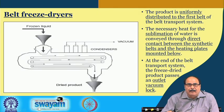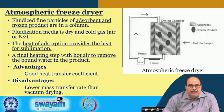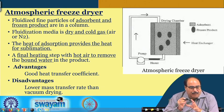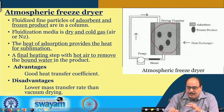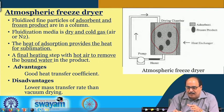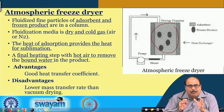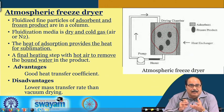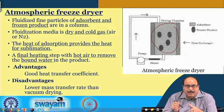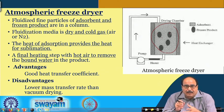The atmospheric freeze dryer uses fluidized fine particles of the adsorbent and frozen product placed inside a chamber called the dry chamber or column. The adsorbent and the frozen product are put in the dry chamber, and the fluidization medium is a dry and cold gas — air or nitrogen. The heat of adsorption provides the heat for sublimation, and a final heating step with hot air is provided towards the end to remove bound water from the product.